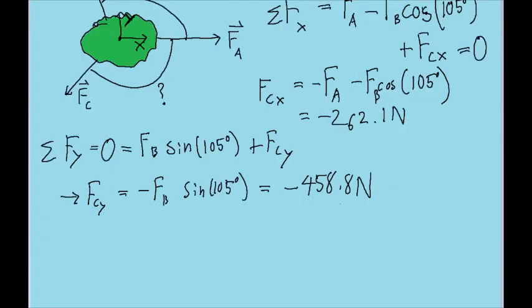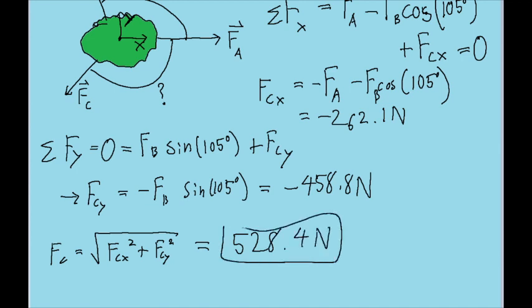So now we have both the x and the y components of the force of f c. So the way we get the resultant force now is we take the Pythagorean theorem. So f c is equal to the square root of f c x squared plus f c y squared. So we just take a calculator and then put in these two components in for this square root formula. And what we find then is that f c is about 528.4 newtons. So that is the magnitude of f c.